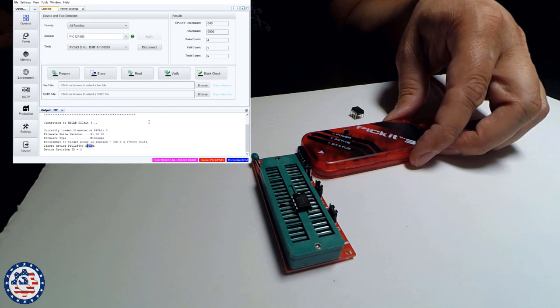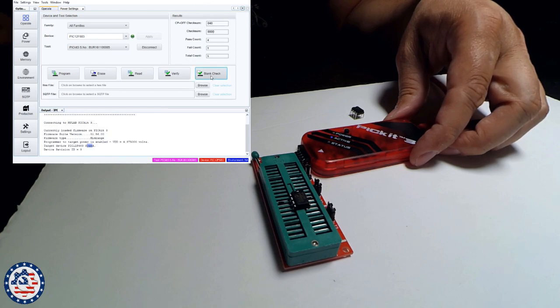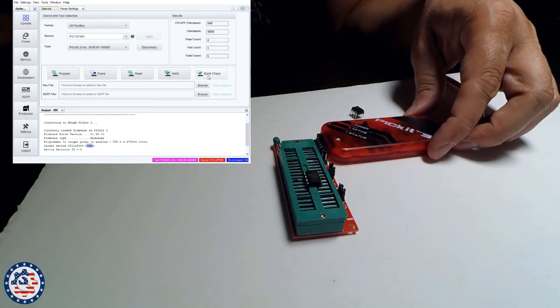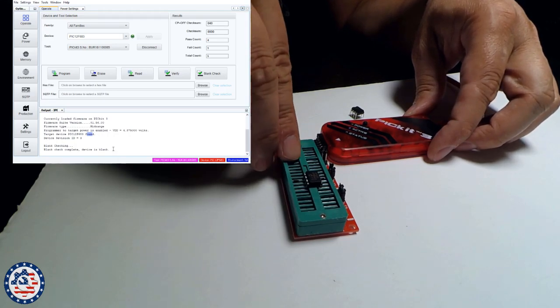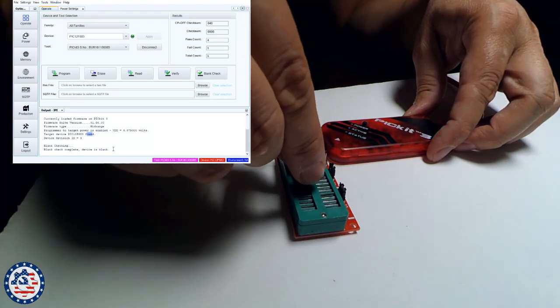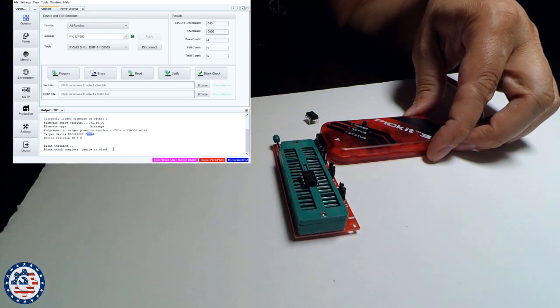Next, I'm going to go ahead and check whether this microcontroller is blank. And I can do a blank check. It is going to read it and say it's a blank check complete. Device is blank. So I'm going to go ahead and do that for my second chip as well. Make sure that I put this in the right place. Plug it in and do a blank check again.